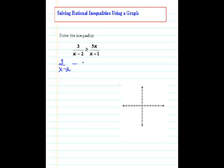So I'll begin by subtracting the 5x over x plus 1 from both sides and comparing to zero. Now this is a more complex rational equation, but it's much easier to compare to zero because zero is just the x-axis. The question is really, when is this thing going to be above or on the x-axis?